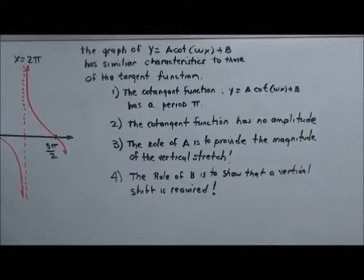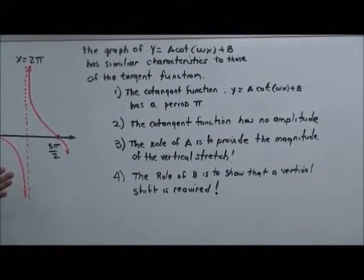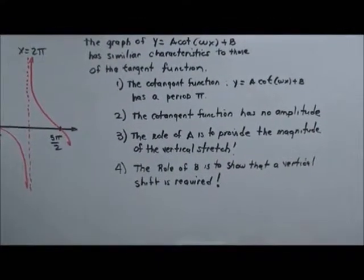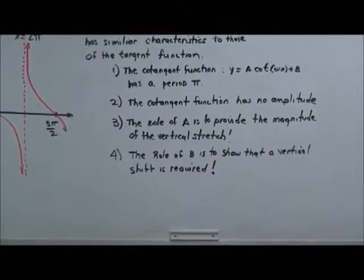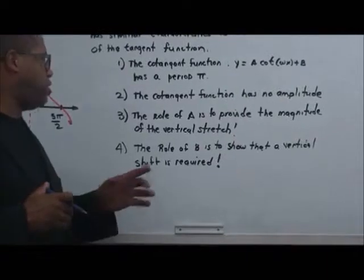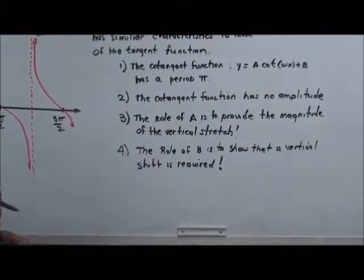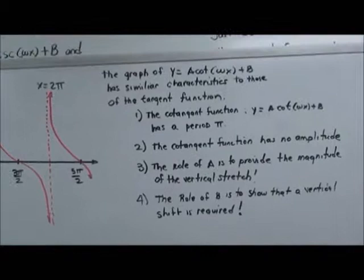And the role of A is provided. It provides that the magnitude gives you a nice vertical stretch there. And so the role of B, remember, shows that there's a vertical shift, and a vertical shift is required when that's shown there, just like that.